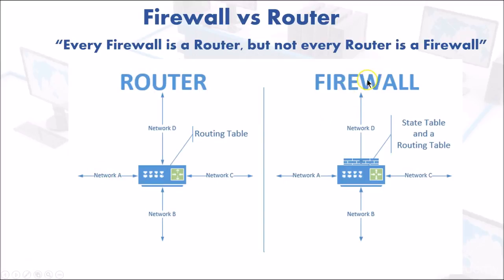A firewall does something similar, but when data comes in, it doesn't just consult its routing table — it checks its state table, checking the state of the connection. The firewall checks: is this a new connection? Is this an existing connection? If it is an existing connection, is the connection too old? So the firewall has another layer of checking before it makes a routing decision.